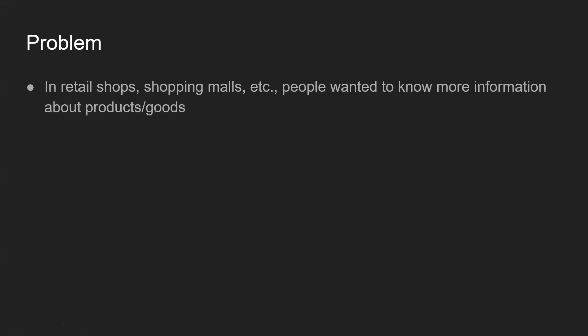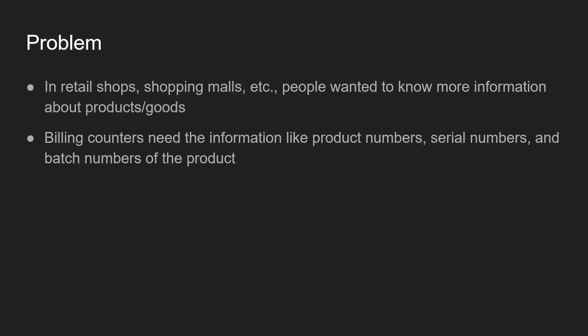In retail shops, shopping malls, and grocery shops, people want to know more information about the products or goods they select. But that information might not be present on the product itself — there may be a lot of information that can't all fit on the product. And once the product is selected, people go to the billing counter. The billing staff need information like product numbers, serial numbers, and batch numbers to enter into the billing system, which is a tedious, time-consuming job.